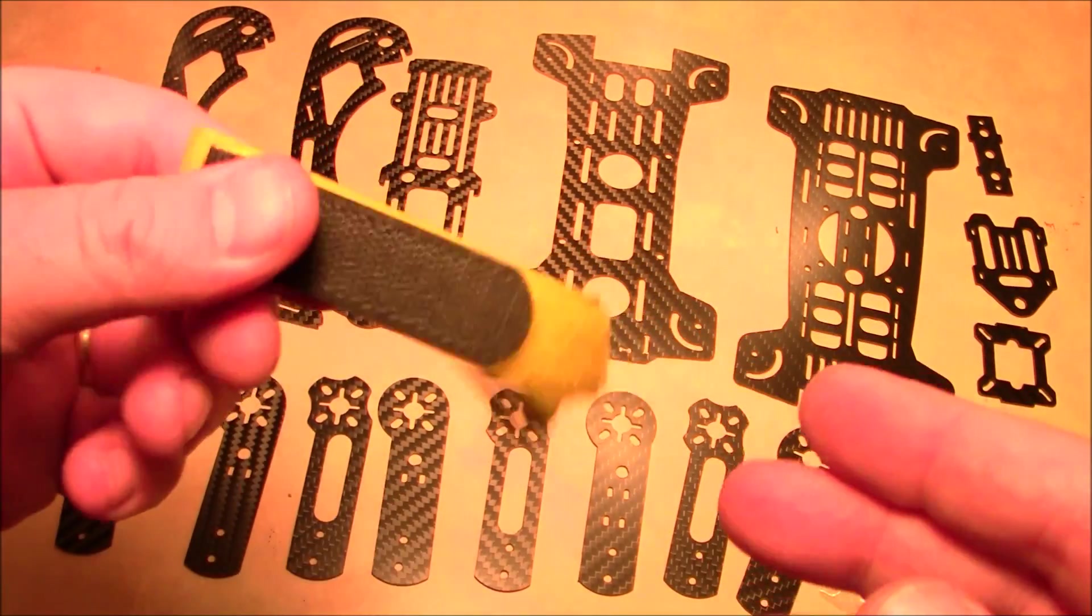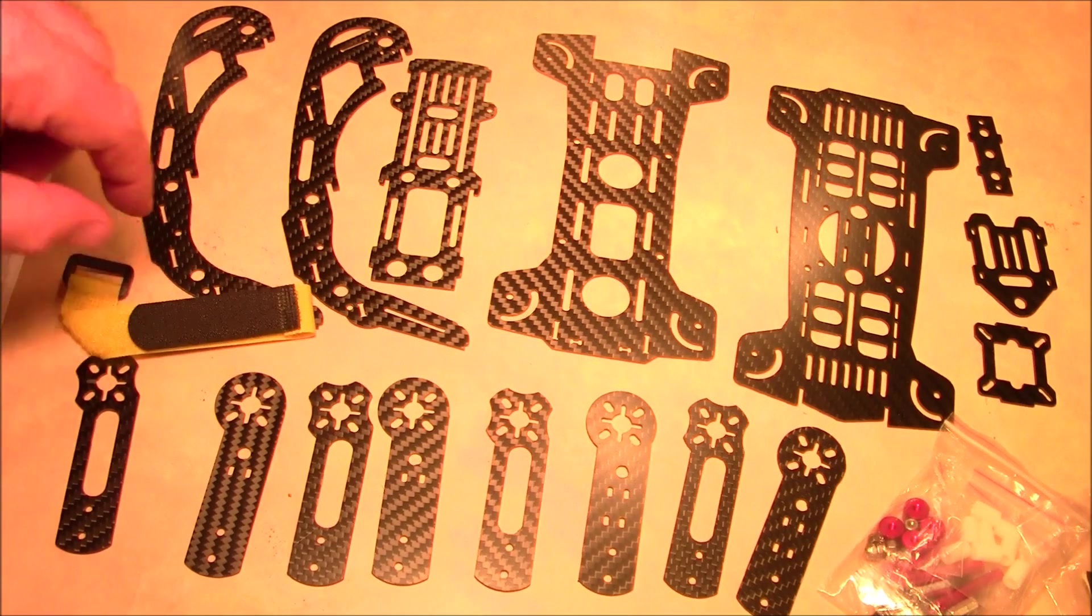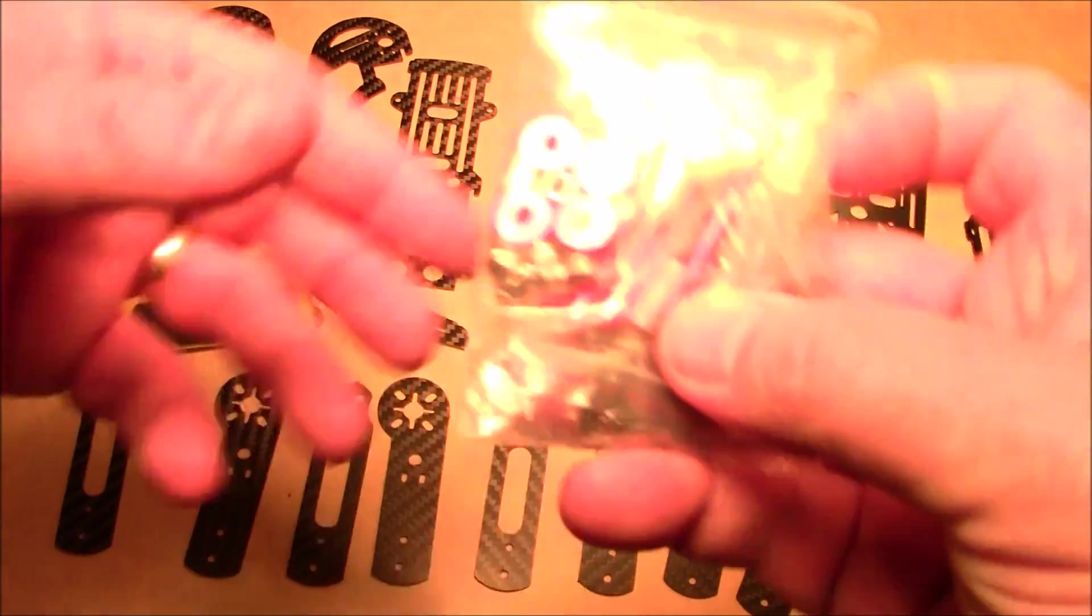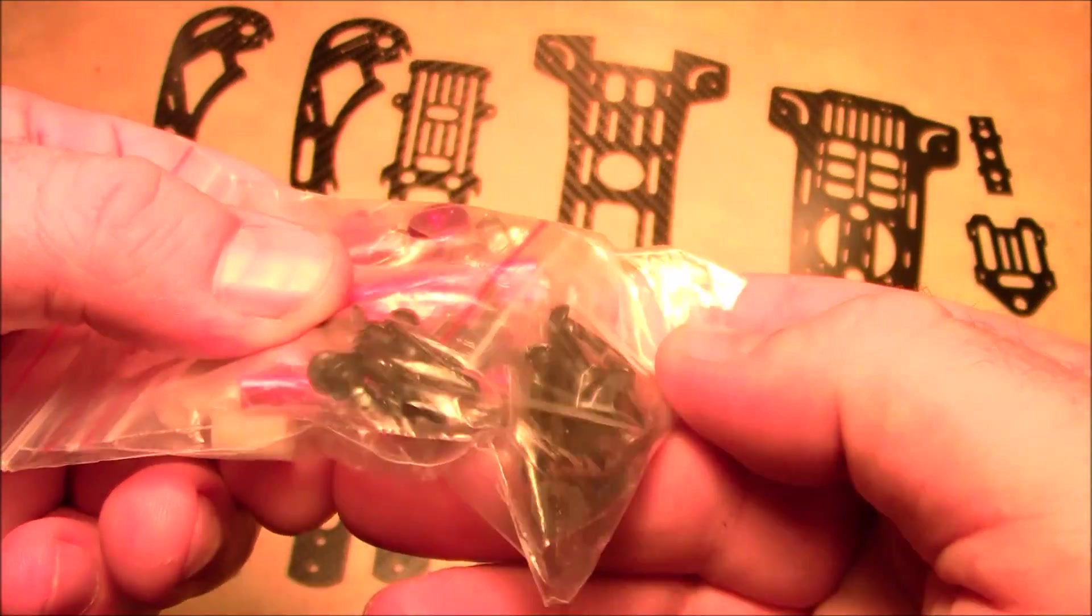This one also came with a battery strap. I haven't seen too many quadcopters actually come with battery straps. The Voodoo 250 did, but I haven't seen these from Banggood come with them.